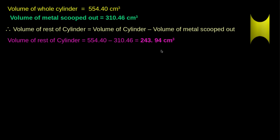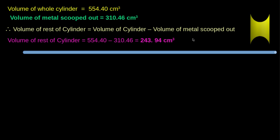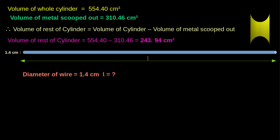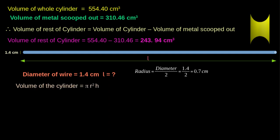Now, this remaining solid is converted into a cylindrical wire of thickness 1.4 cm. Here, the thickness of the wire is nothing but the diameter of the wire. So we have to calculate the radius of the wire. The radius of the wire is given by diameter divided by 2, that is 1.4 / 2 = 0.7 cm.